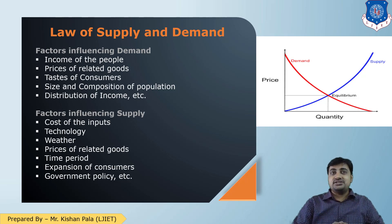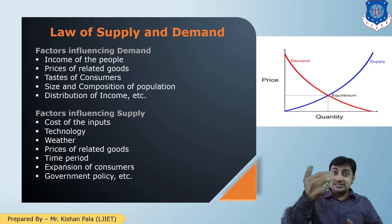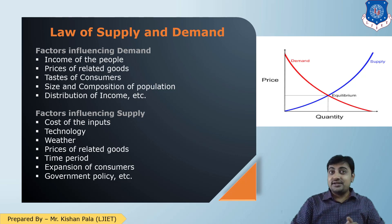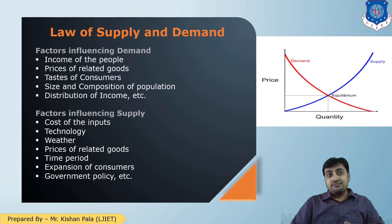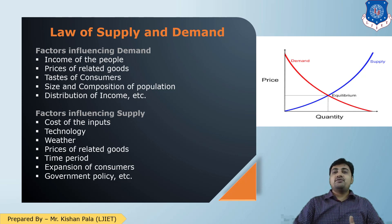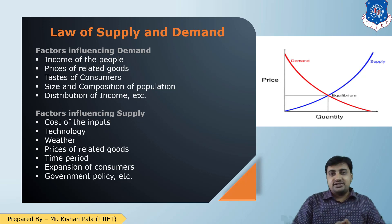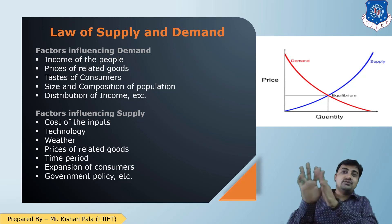So the factors affecting demand are: income, price, taste, size of population, and distribution of income. Similarly, factors affecting supply are: cost of inputs, technologies, weather, price of related goods, time period, expectations of customers, government policy, and so on.